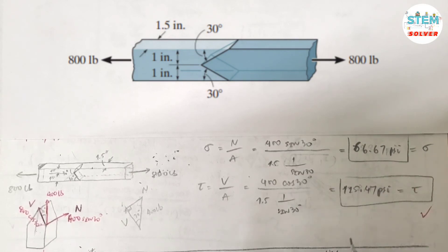Doing the same thing to get the shear stress. The shear force is 400 times cosine 30 divided by the area. The area in this case is the same area, so we'll get 115.47 psi.